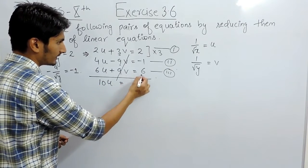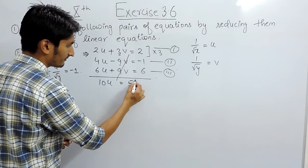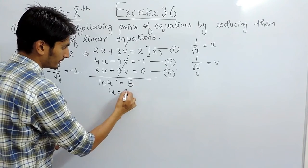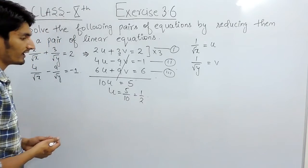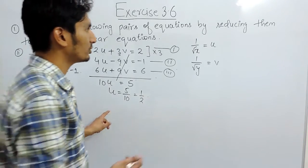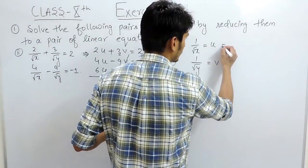This is 10u and this is 5, so the value of u must be 5 upon 10 which equals to 1 by 2. So the value of u is basically 1 by 2.